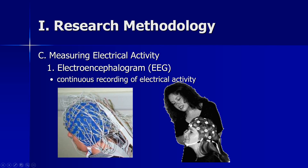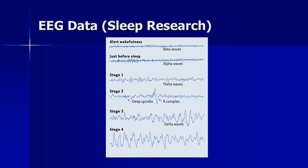Another system involves a scalp cap with injected gel, which makes a mess. The nice thing about EEG is it's accurate and relatively inexpensive — a top-of-the-line system is about $100,000, which sounds like a lot but is relatively cheap compared to other techniques. EEG provides what we call a state measure: it shows how brain waves change from alert wakefulness through stages 1, 2, 3, and 4 of sleep — a nice indicator of what state the brain is in.